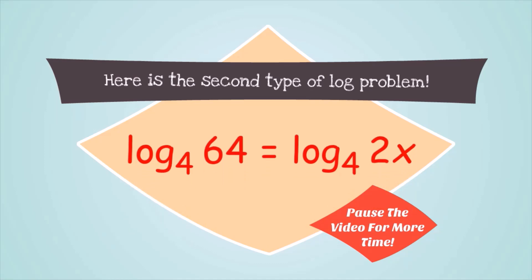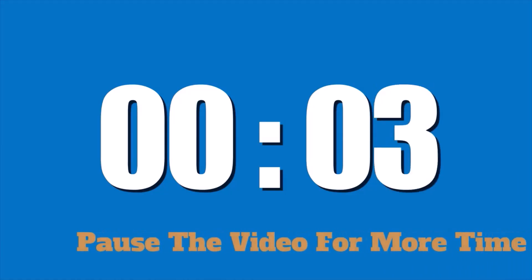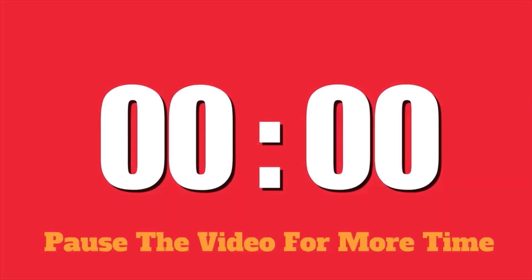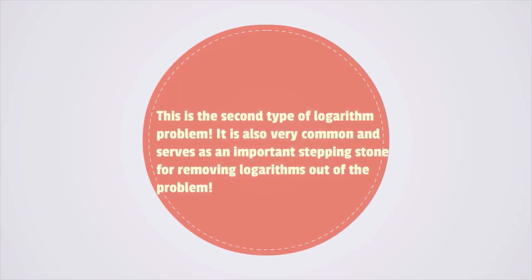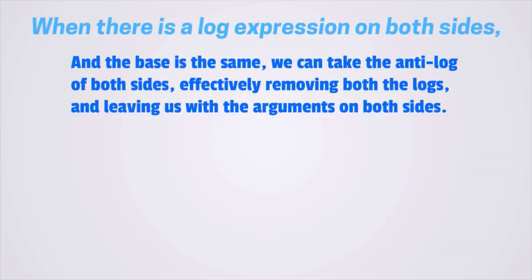Here is the second type of logarithm problem: log base 4 of 64 is equal to log base 4 of 2x. This is also very common and serves as the important stepping stone for removing logarithms from the problem. When there is a log expression on both sides and the base is the same, we can take the anti-log on both sides, effectively removing both logarithms and leaving us just with the arguments on both sides.